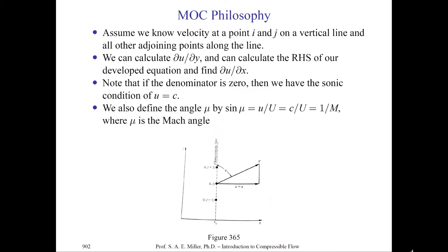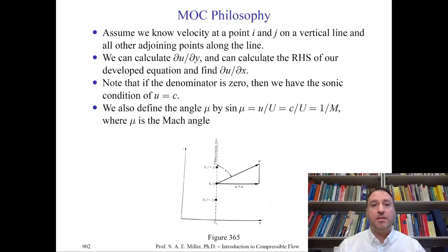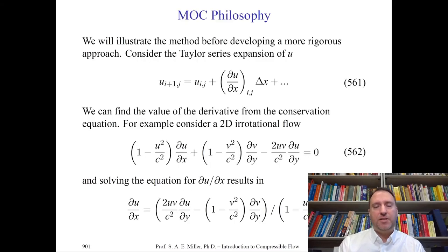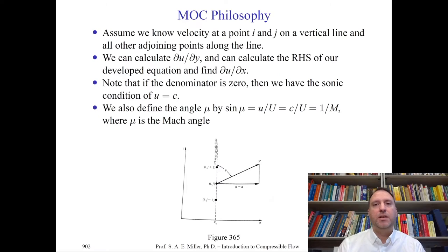Before applying Taylor series expansions, I want to make some notes about the general philosophy of the method of characteristics. Assume that we know the velocity at a single point i,j in a particular vertical line — the line where we know the solution. As we increment i into positive values, we increase from i=2 to 3 to 4, and so on, as we march downstream. j will be the vertical line direction and all adjoining points along the line, as shown in figure 365.